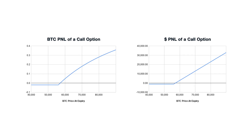Any profits or losses will also be paid and received in bitcoin. While this seems on the face of it to be a minor difference, it leads to an interesting difference in the profit or loss calculations of the options. When calculated in bitcoin, the payoffs now have a curve to them rather than the previous linear payoffs.